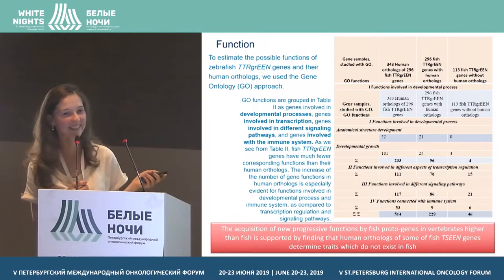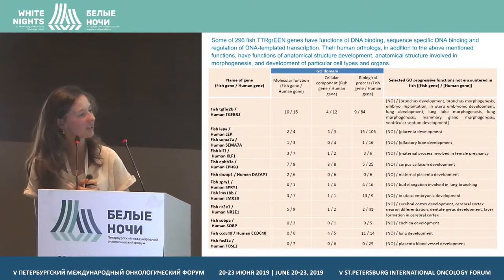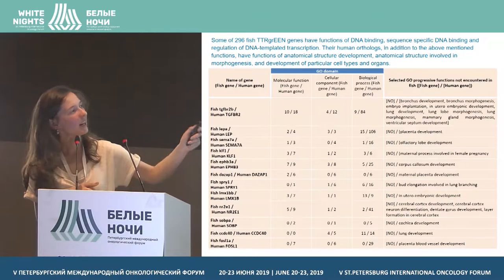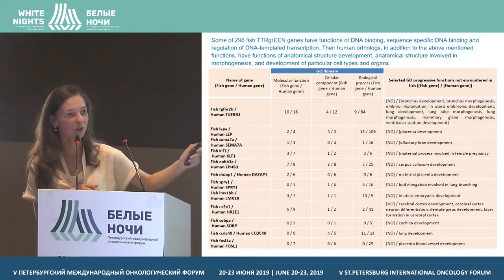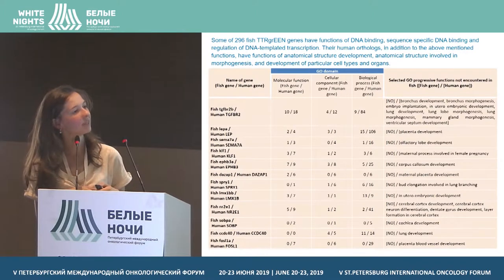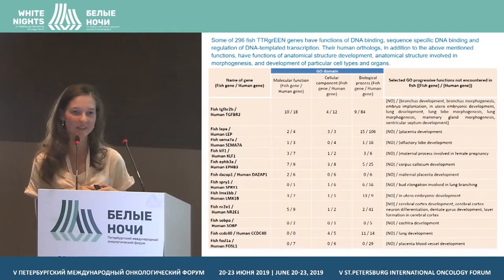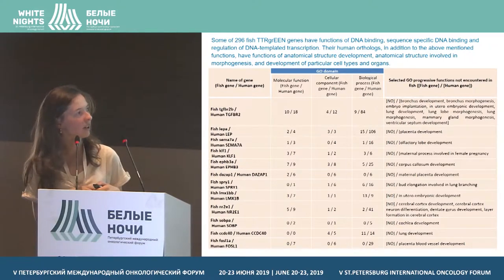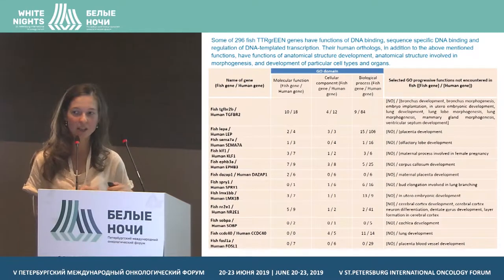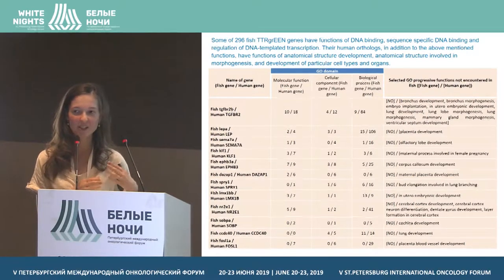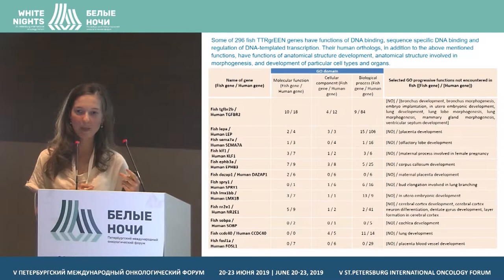So what we see is: a gene was formed and then it acquired a function. This next slide is more interesting and confirms the previous one. You see a list of functions in which these genes take part — functions that the fish do not have at all; they do not have such organs. These functions are connected with the development of the lungs and the development of the placenta. When these genes were formed in a fish and then preserved in the course of evolution, they were integrated into very serious morphogenetic networks and started executing very interesting and important functions.